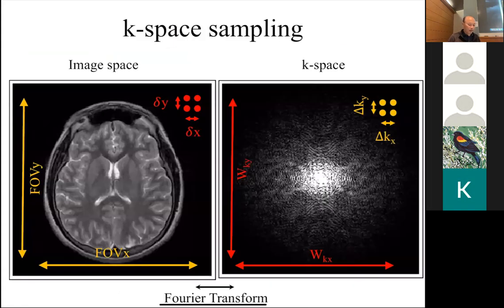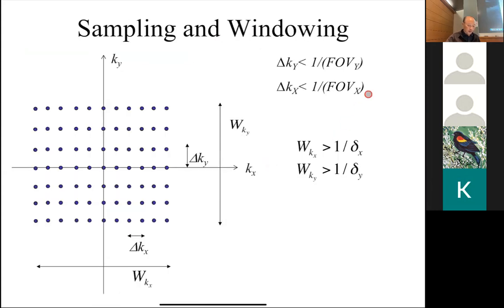The main thing we talked about last time was how to define K-space sampling. Given a user-specified field of view and resolution, we came up with design criteria for delta K and the width. Delta K should be less than one over the field of view, and the width in the Fourier domain just has to be greater than one over the resolution. For MATLAB problems, you can just set them equal.